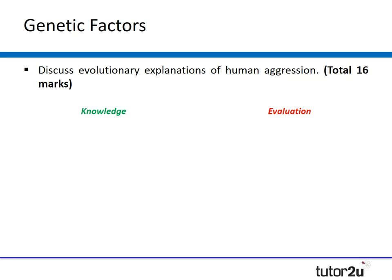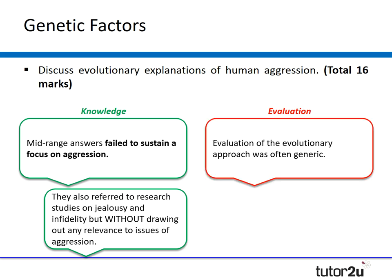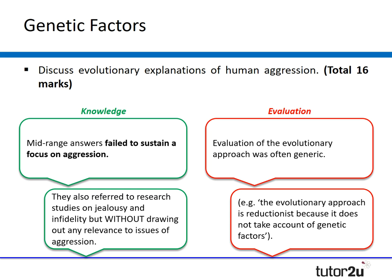The second question: discuss evolutionary explanations of human aggression. The examiner said that mid-range answers typically fail to sustain focus on aggression — this also occurs in other topics like eating behaviours. Students referred to research on jealousy and infidelity without drawing relevance back to aggression, so students need to link research back to the question. Evaluation about evolution was often generic — for example, students wrote 'the evolutionary approach is reductionist because it doesn't take into account genetic factors,' which is a very weak point that doesn't link back to the question.